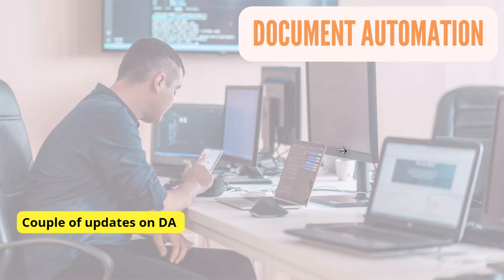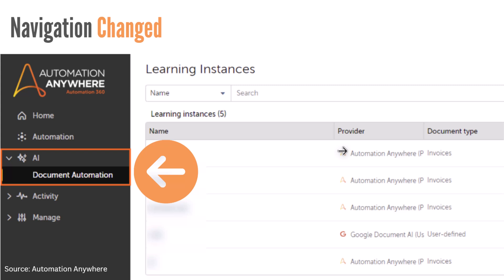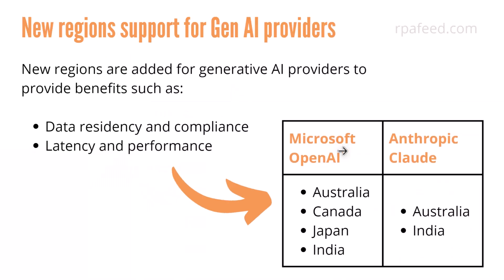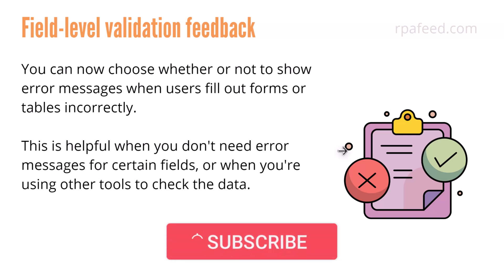Now coming to document automation. There are a couple of updates in this release. First is the navigation — it's changed. Whether you are using community edition or enterprise edition, you'll see this icon. Document automation is now available under the heading called AI. There is also support for new regions; new regions are added for Gen AI providers — Microsoft OpenAI and Anthropic. Australia and India regions are included for Anthropic, and for OpenAI, Australia, Canada, Japan, and India are added. Additionally, field-level validation feedback is enabled. You can now choose whether to show or hide error messages when a user fills out form or table fields incorrectly.